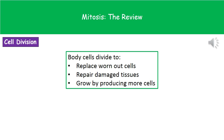Welcome to our review on mitosis. Within the body, we need certain types of cell division to take place. Our body cells need to divide in order to replace any cells that become worn out, to repair any damaged tissues if you cut yourself for example, and also to allow organisms to grow by producing more cells.